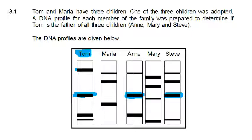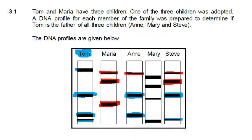Tom's third band appears only in Anne, and his last band appears only in Steve. At this point we cannot make snap judgments yet. Now let's have a look at Maria. Maria's first band appears in both Anne and Steve. Her second band appears in Steve only, and her third band doesn't appear in any of her children.